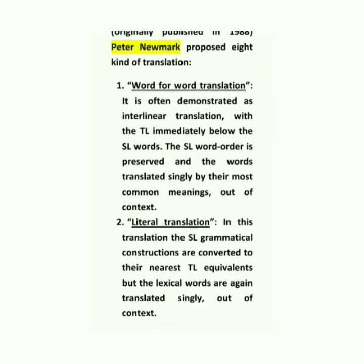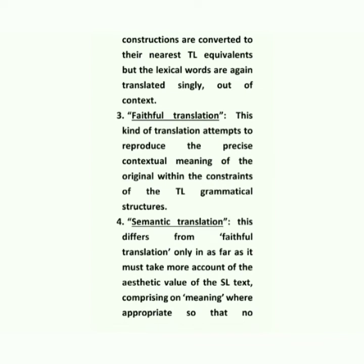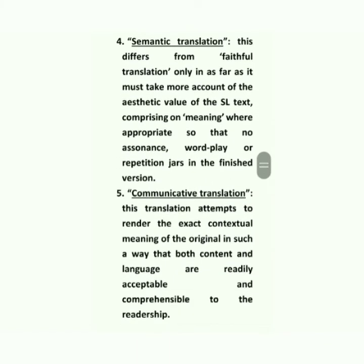In the Textbook on Translation, originally published in 1988, Peter Newmark proposed eight kinds of translation. First is word-for-word translation, often demonstrated as interlinear translation with the TL immediately below the SL words; the SL word order is preserved and the words are translated singly by their most common meanings out of context. Second is literal translation, where the SL grammatical constructions are converted to their nearest TL equivalence but the lexical words are again translated singly out of context. Third is faithful translation, which attempts to reproduce the precise contextual meaning of the original within the constraints of TL grammatical structures. Fourth is semantic translation, which differs from faithful translation in that it must take more account of the aesthetic value of the SL text, compromising on meaning where appropriate so that no assonance, wordplay, or repetition occurs in the finished version.